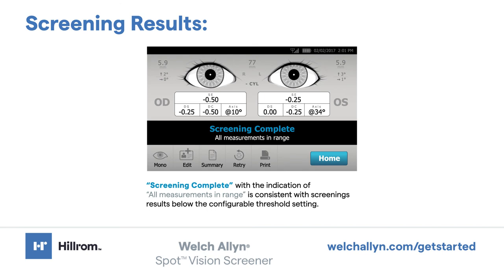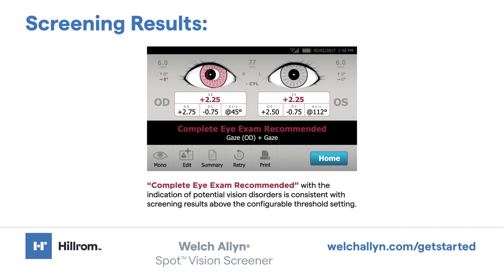Results that are out of range are indicated in red. Screening complete with the indication of all measurements in range is consistent with screening results below the configurable threshold setting. Complete eye exam recommended with indication of potential vision disorders is consistent with screening results above the configurable threshold setting.